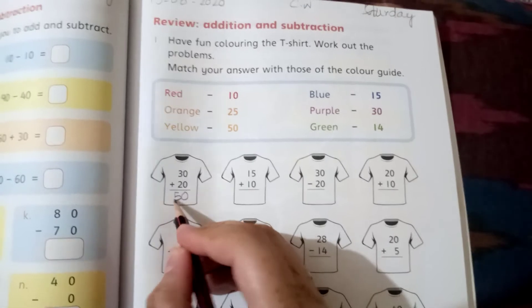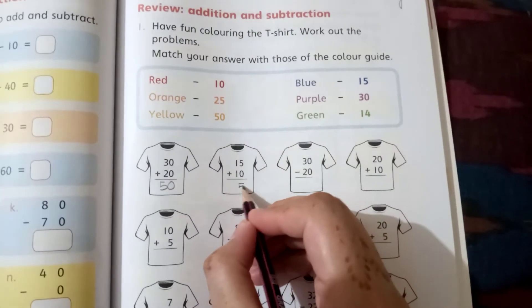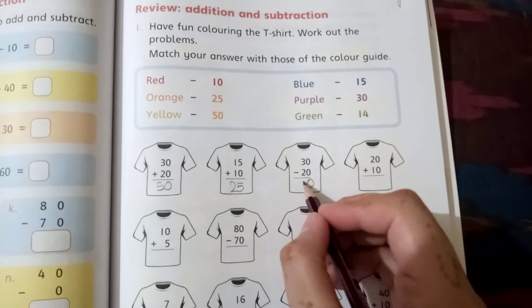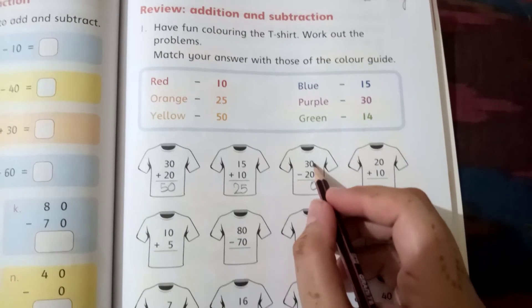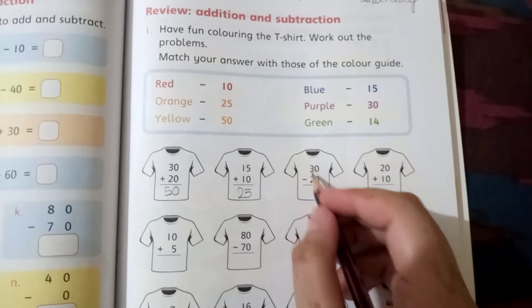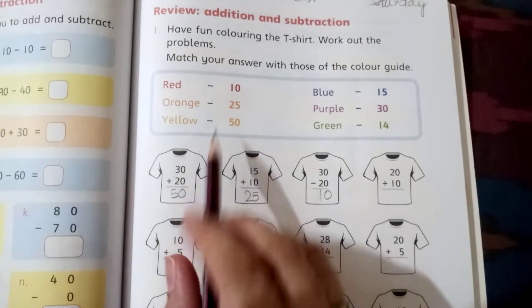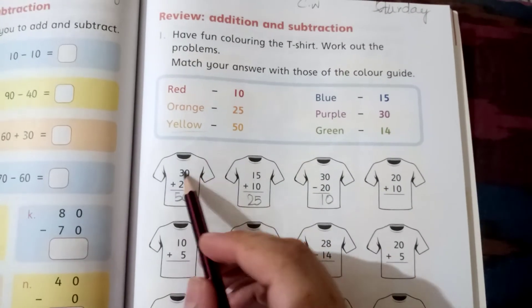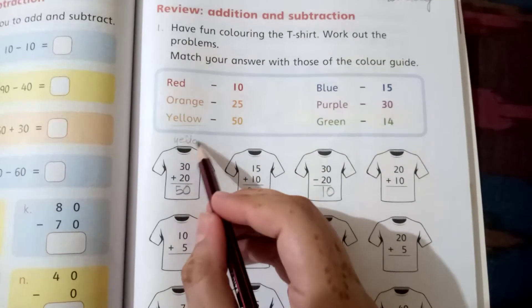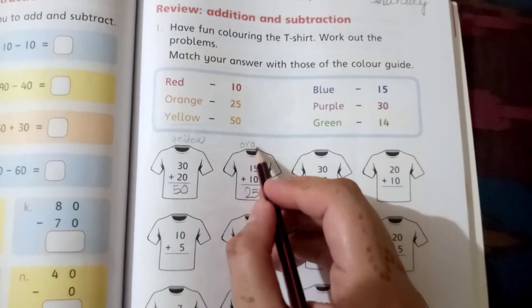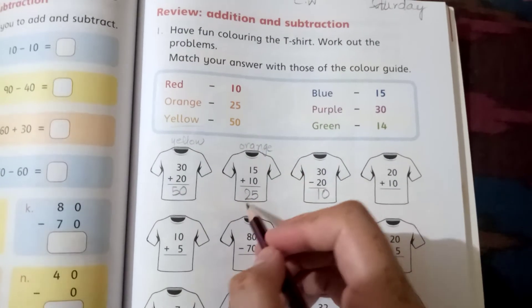3 plus 2 equals 5. 5 plus 0 equals 5. 1 plus 1 equals 2. 0 plus 0 equals 0. 3 plus 2 equals 5. 3 minus 2 equals 1. 3 minus 2 equals 1. 10, 50, 50 - which color is yellow? This t-shirt will be yellow. This t-shirt will be orange. This t-shirt will be orange.